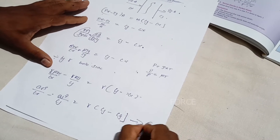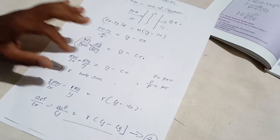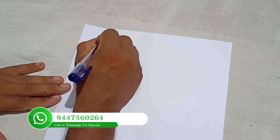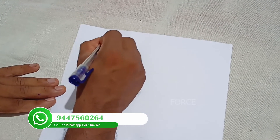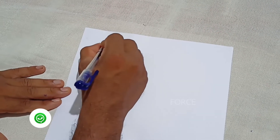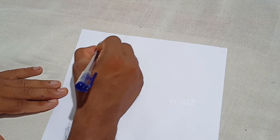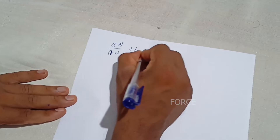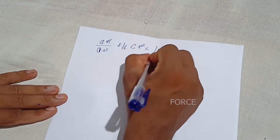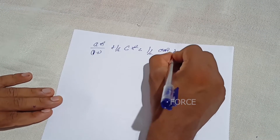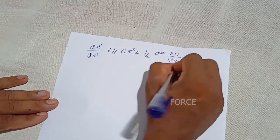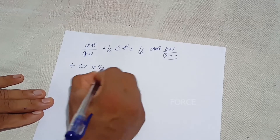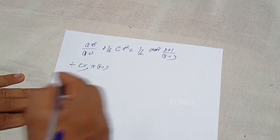This is the momentum equation rearranged. We have to work with it. We have to do: a² by (gamma minus 1) terms. a² by (gamma minus 1) plus half Cx is equal to half a*² into (gamma plus 1) by (gamma minus 1) divided by Cx.